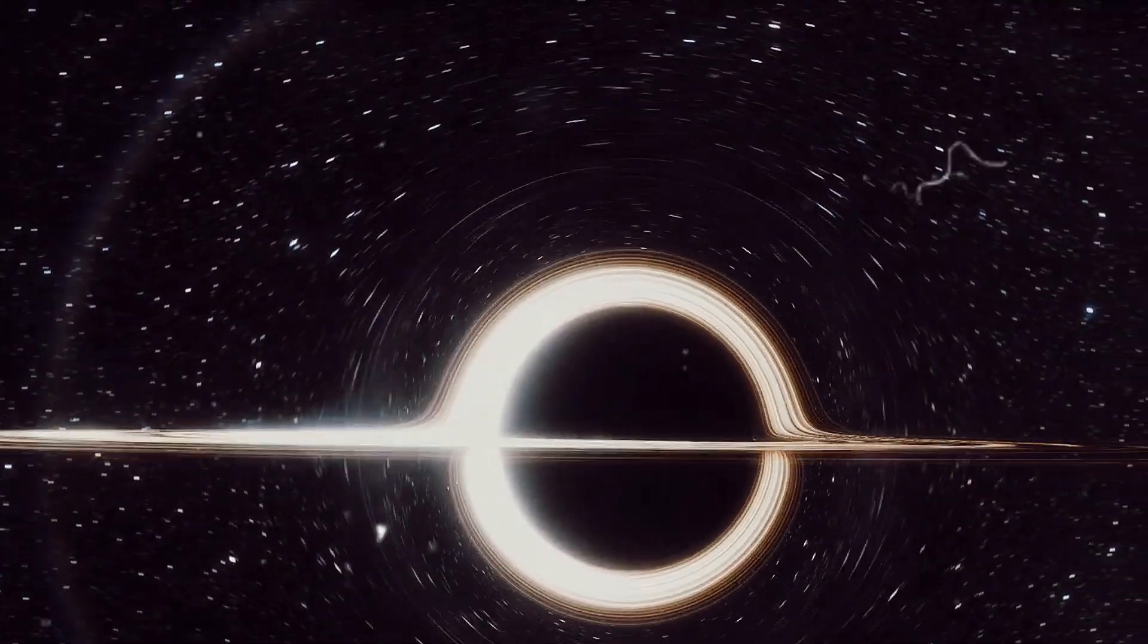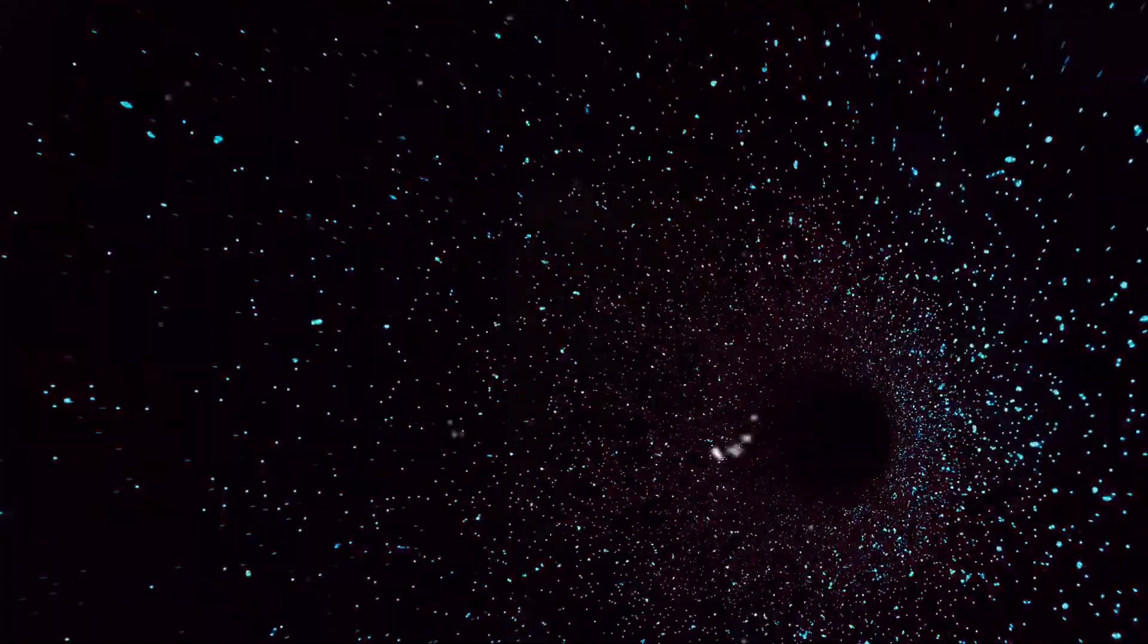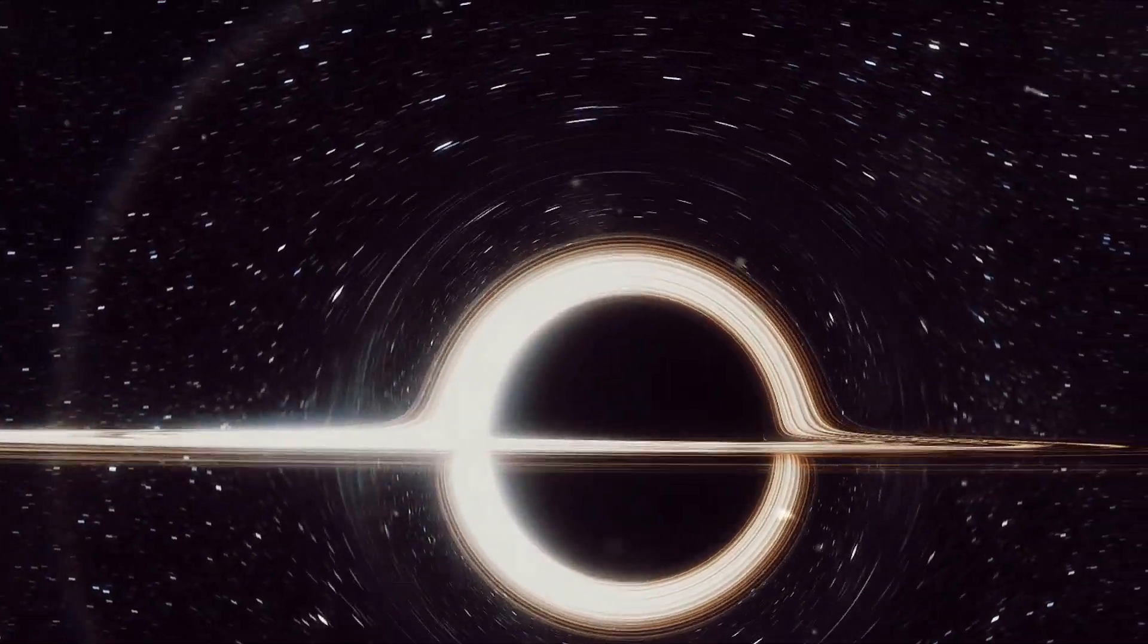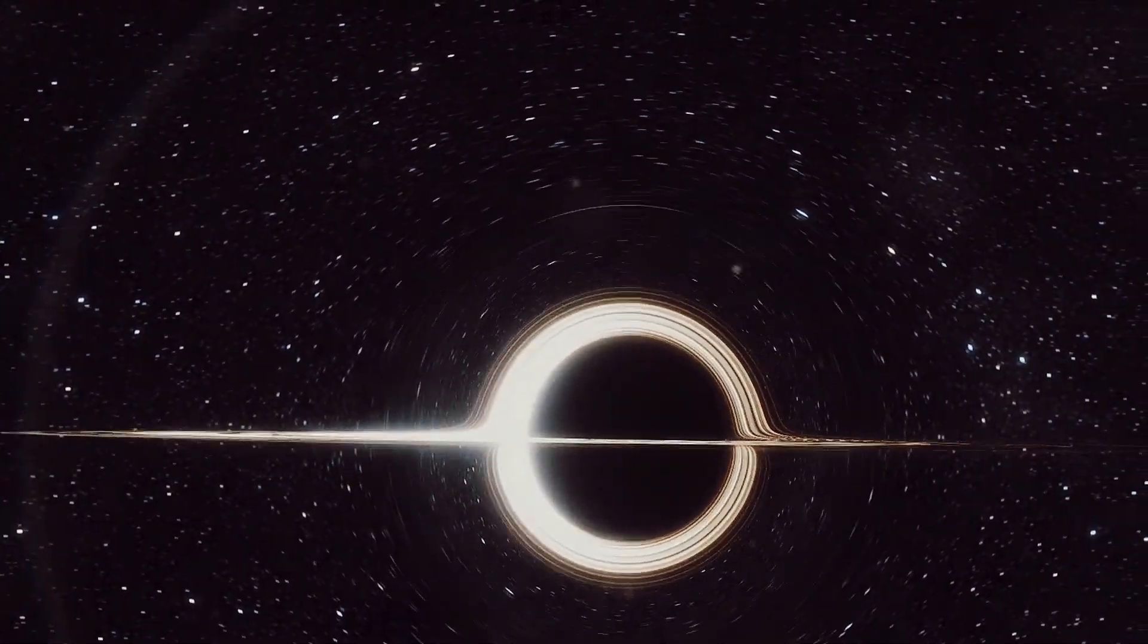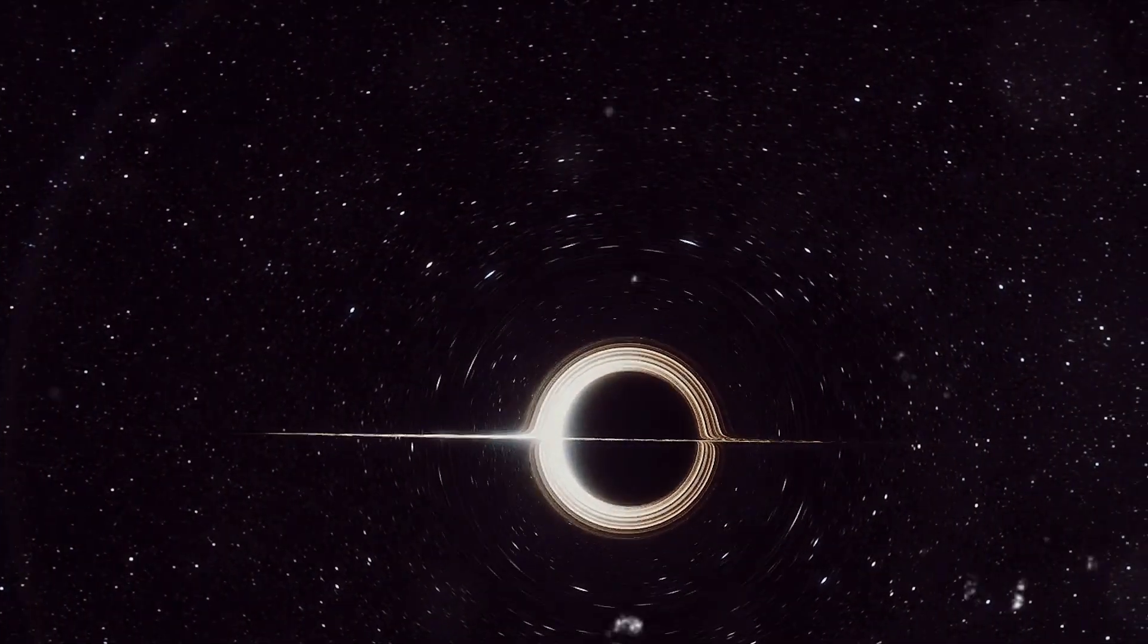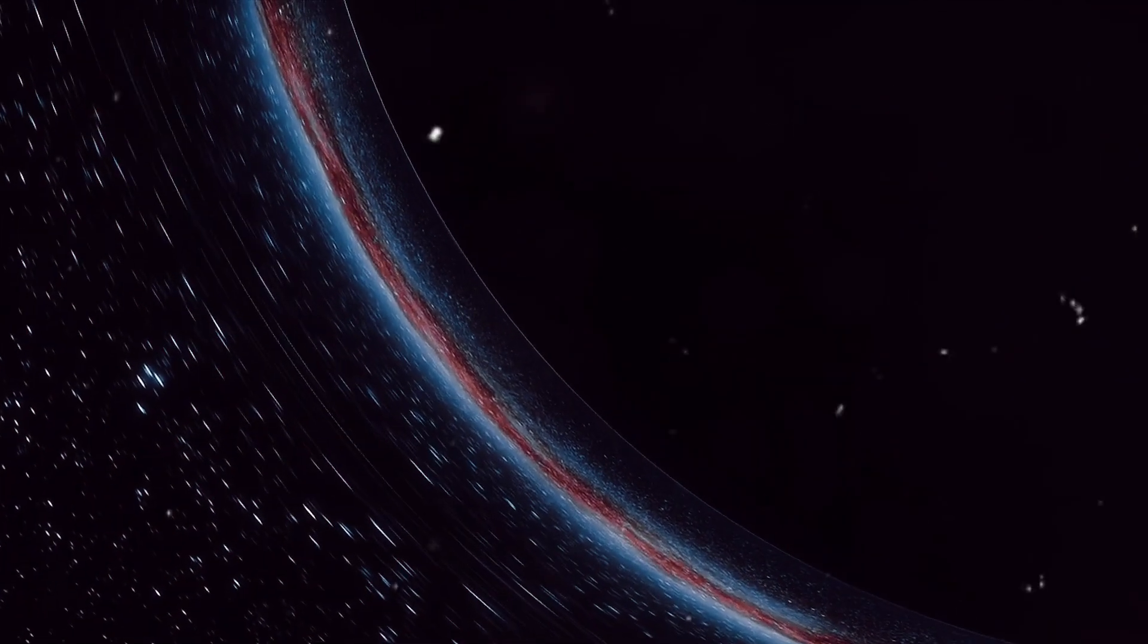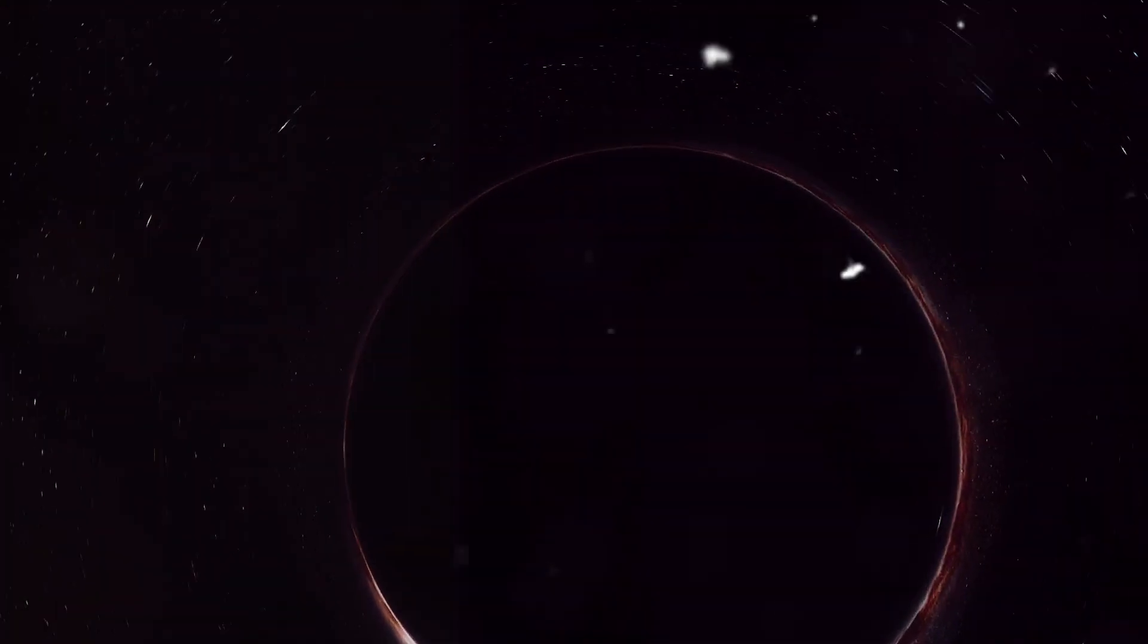Black holes are born from the remnants of massive stars. When such a star has burnt out its nuclear fuel, it undergoes a dramatic collapse under the weight of its own gravity. The outer layers explode into a brilliant supernova, while the core shrinks down to a point of infinite density known as a singularity. The singularity is the heart of a black hole, a place where the laws of physics as we understand them cease to apply. Here gravity is so strong that it warps space and time, creating what we know as a black hole.